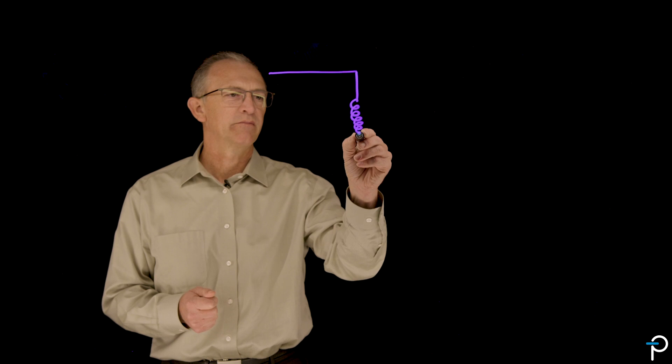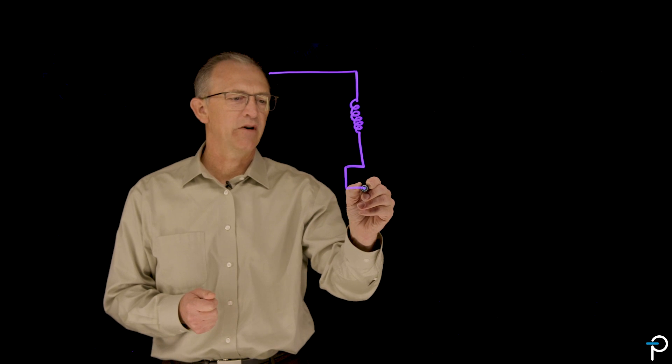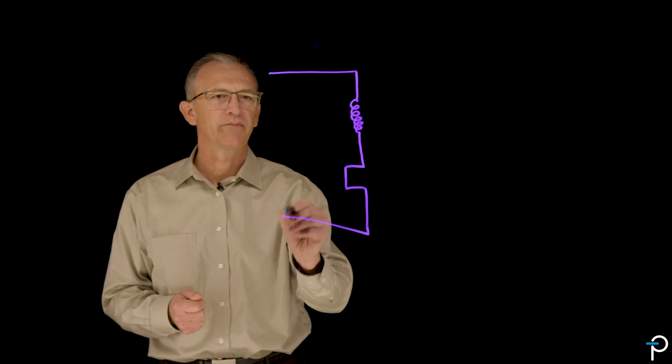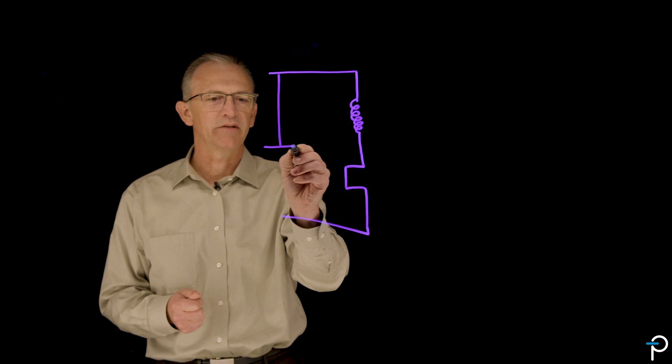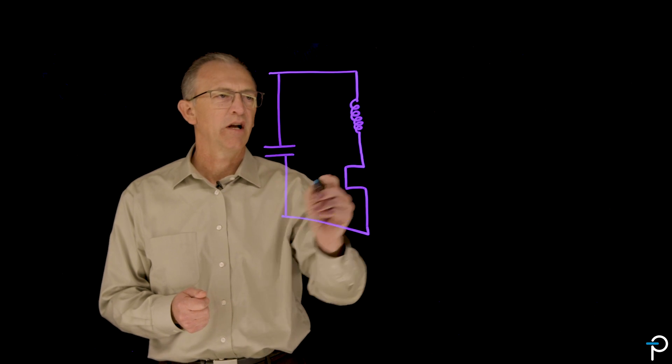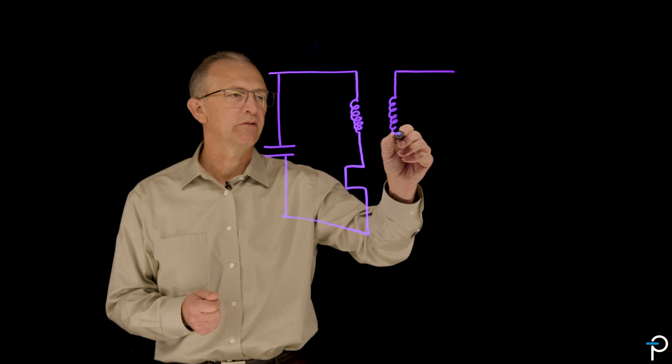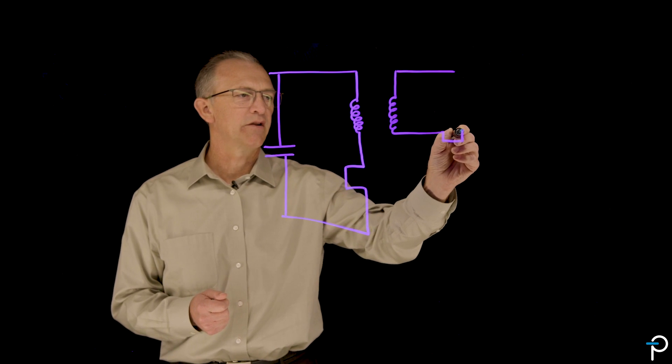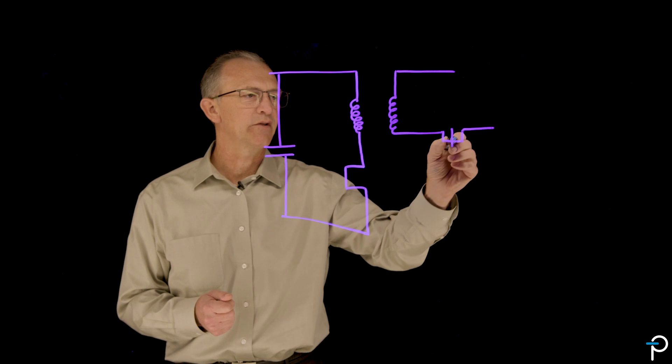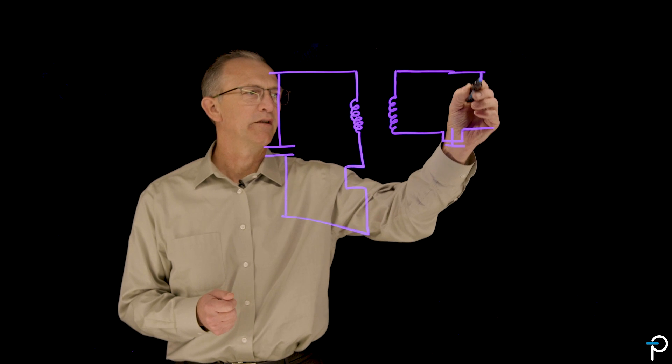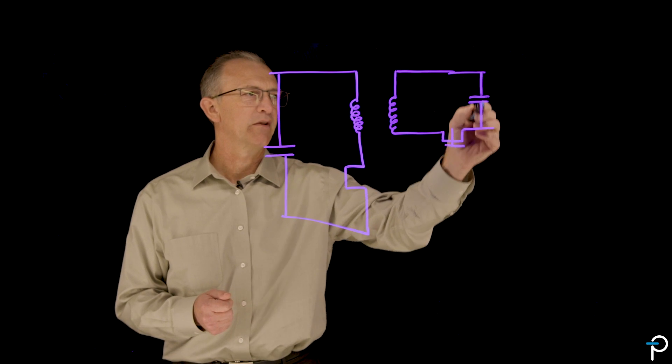Let me draw a flyback power supply. Here we have our transformer, our GaN device, our GaN switch, and our bulk capacitor. And then on the secondary side, the secondary of the transformer, an SR switch for increased efficiency, and another capacitor for the output.